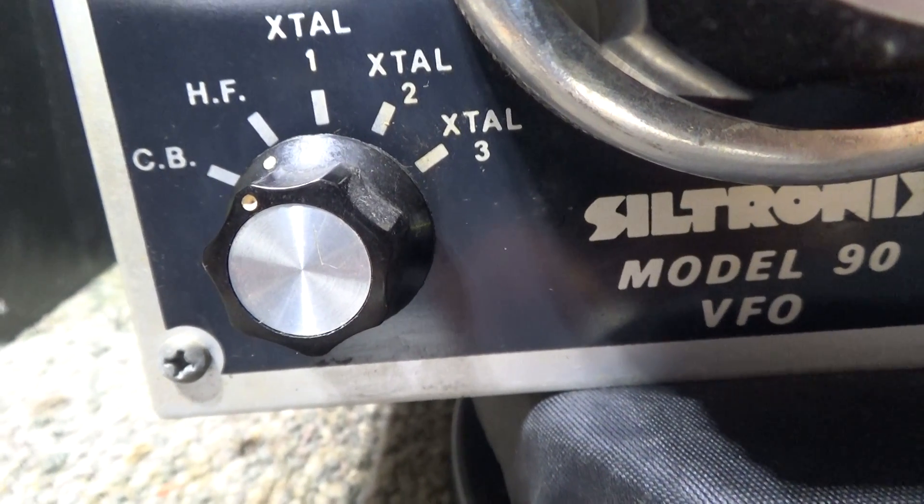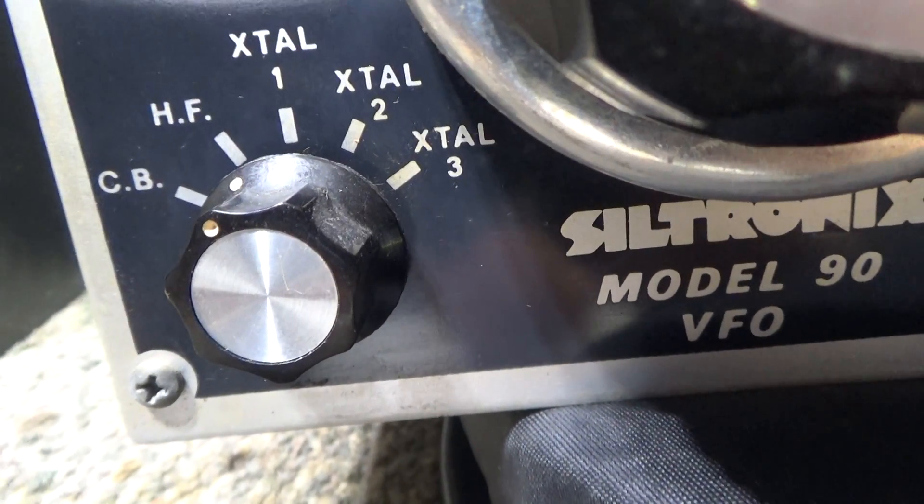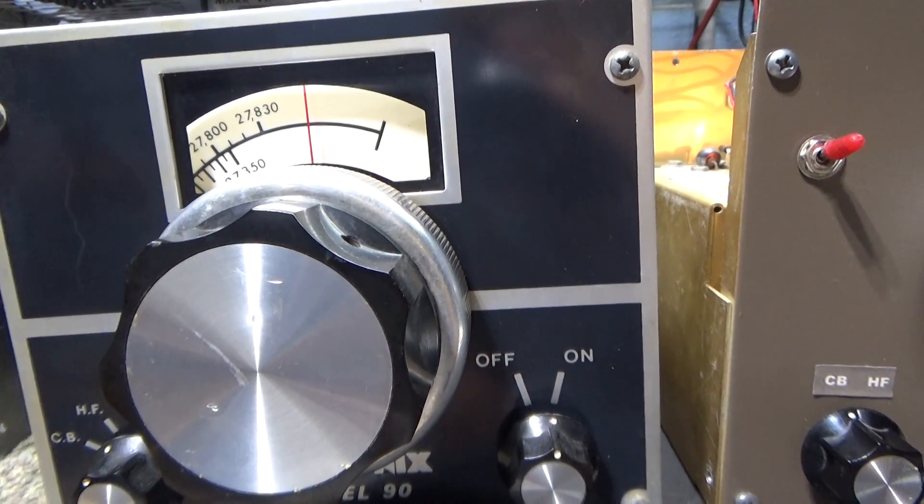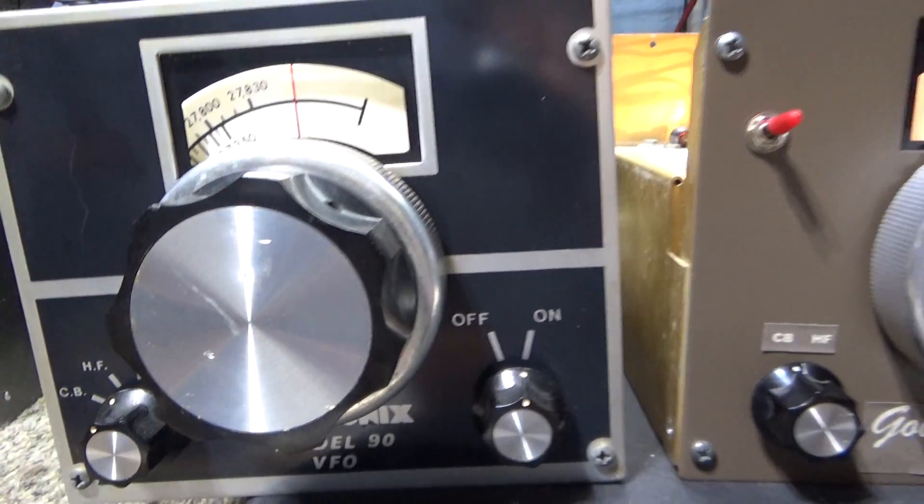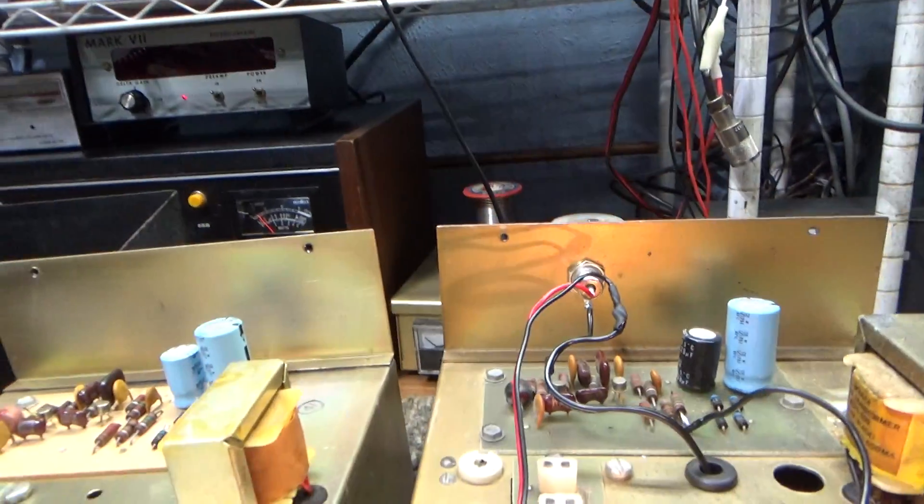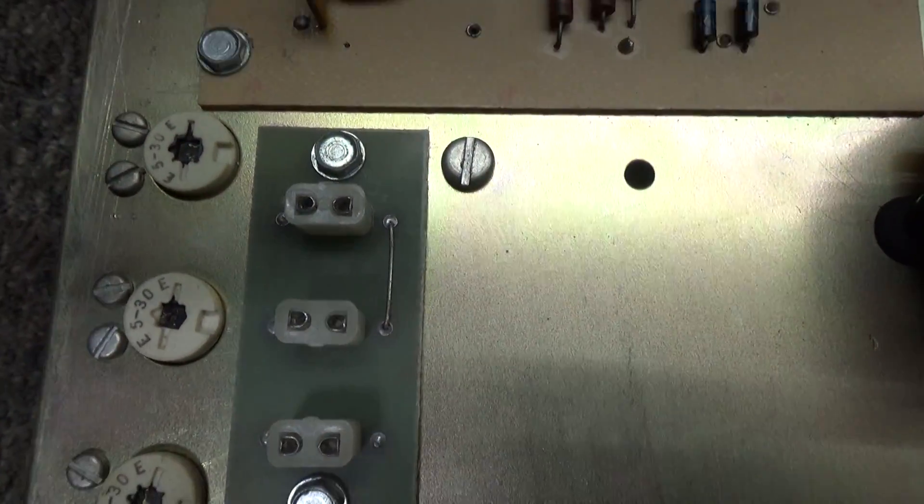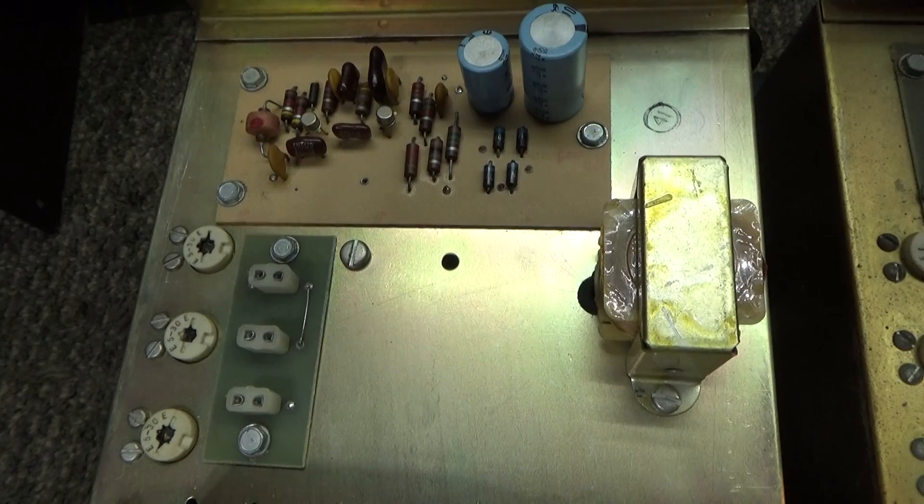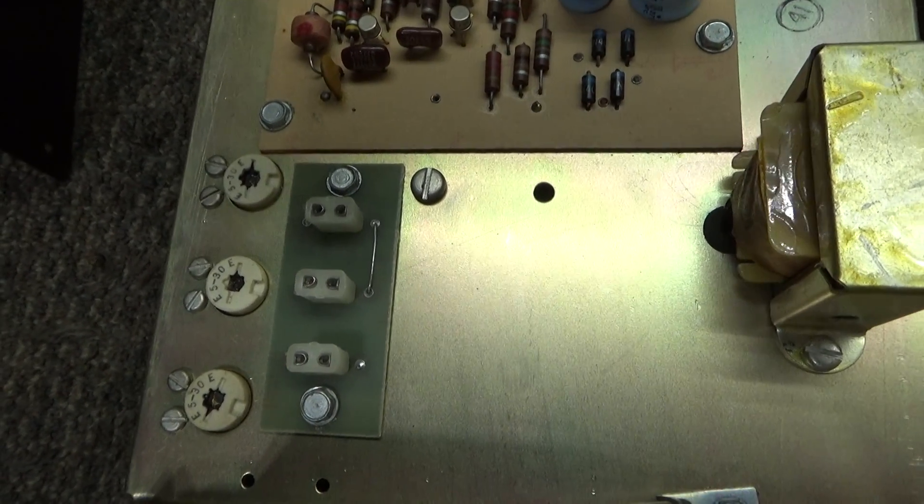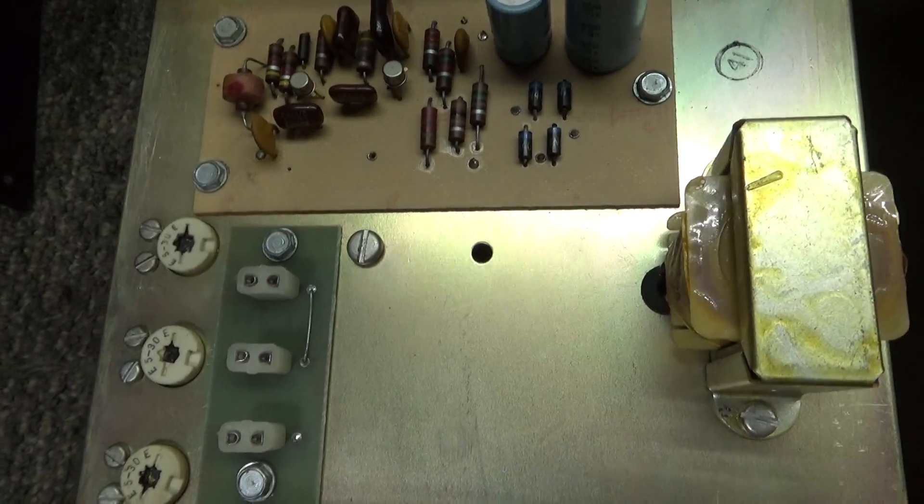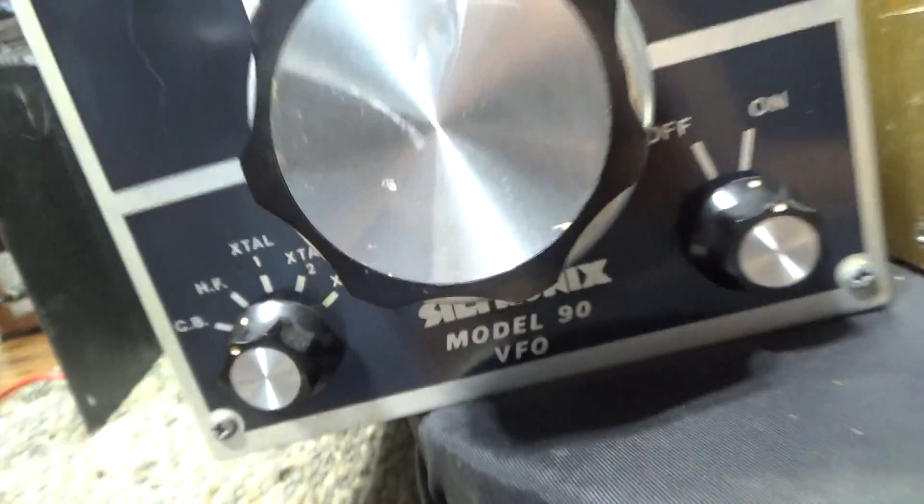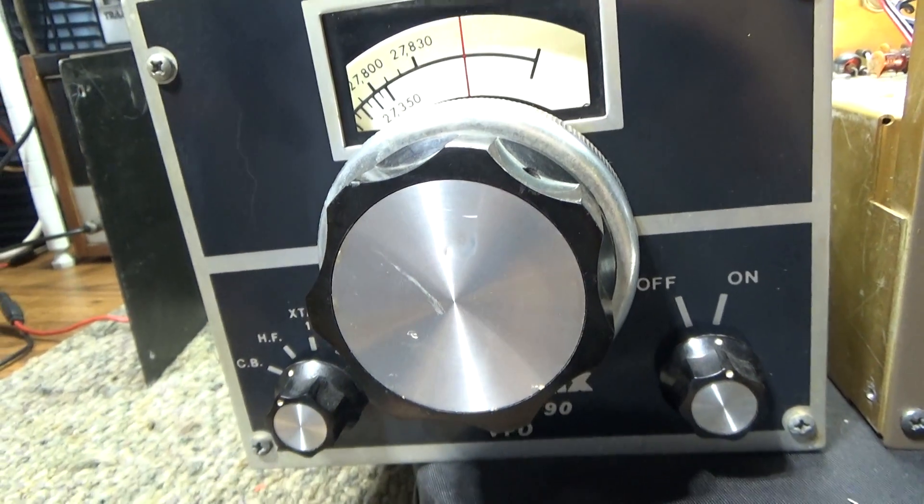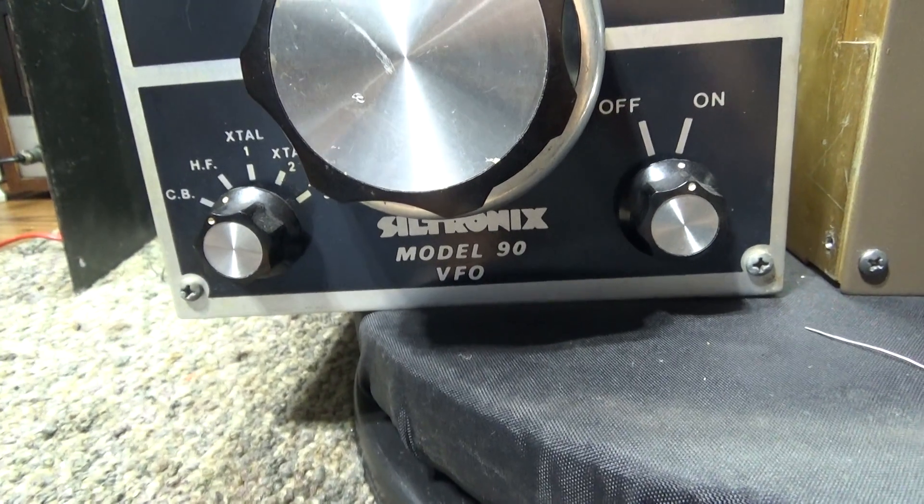Those were if you buy a regular fixed crystal. On these VFOs you would take either channel 1 or usually channel 23 crystal out and plug in the VFO. What you would do is the crystal that you took out, you would just plug into the socket up here, one of these sockets. If you got a couple extra crystals, let's say you only use channel 6, you can get a channel 6 crystal and plug in there. Then down here go to that XTAL position and go right to 6 instead of having to tune in the VFO.